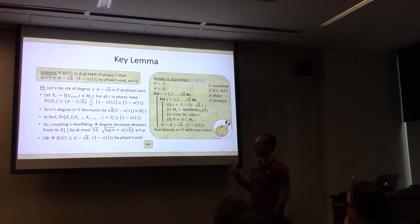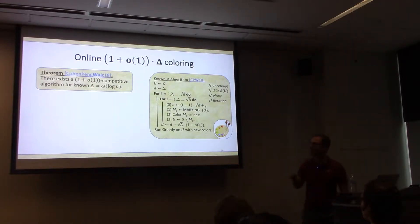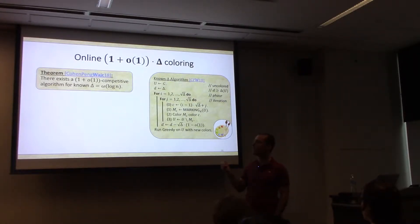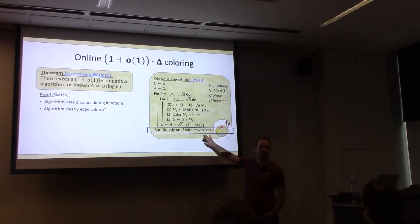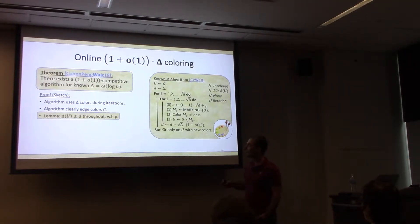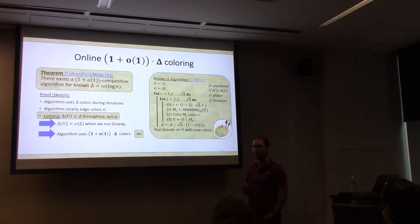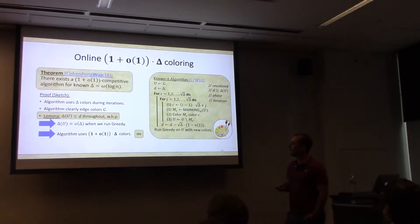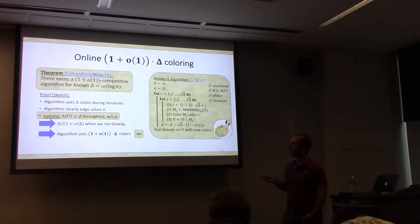Our main result for the known delta regime: there exists a one-plus-little-order-of-one competitive algorithm for known delta which is little-omega of log n. We use delta colors during the iterations, clearly edge color the graph, and by the previous lemma delta_U is at most D at every point with high probability. We decrease D by roughly root-delta for root-delta phases, so the max degree of the uncolored graph is little-order-of-delta. Greedy uses another little-order-of-delta colors, giving one-plus-little-order-of-one competitive.